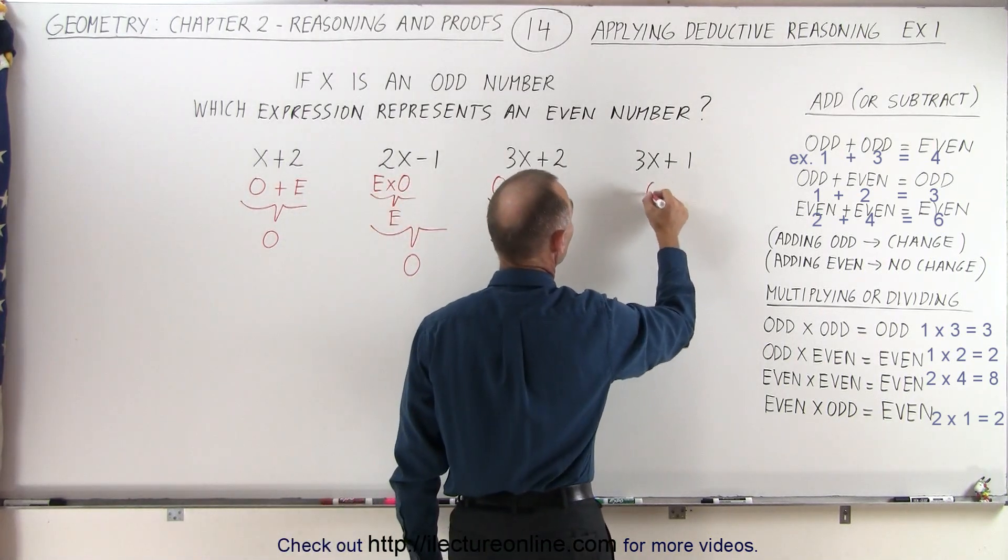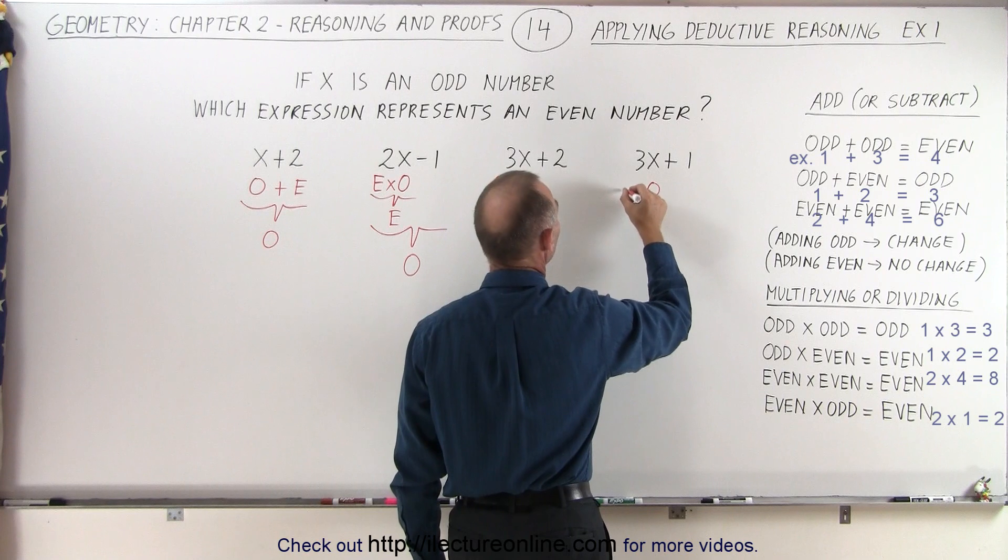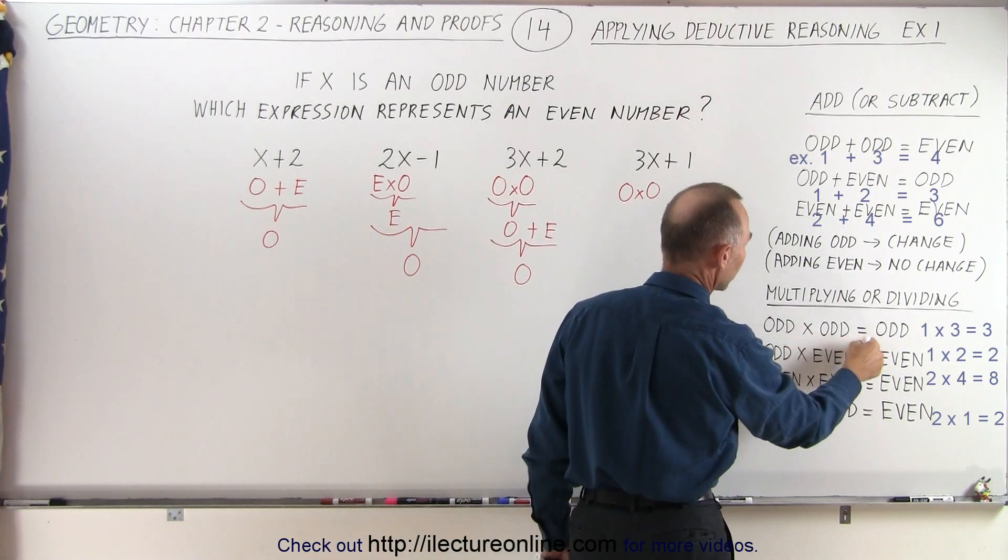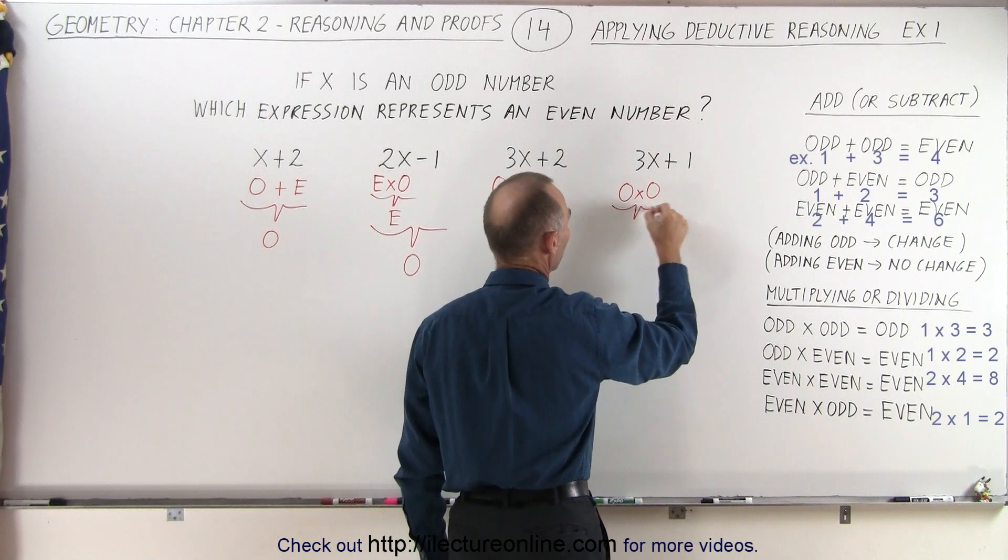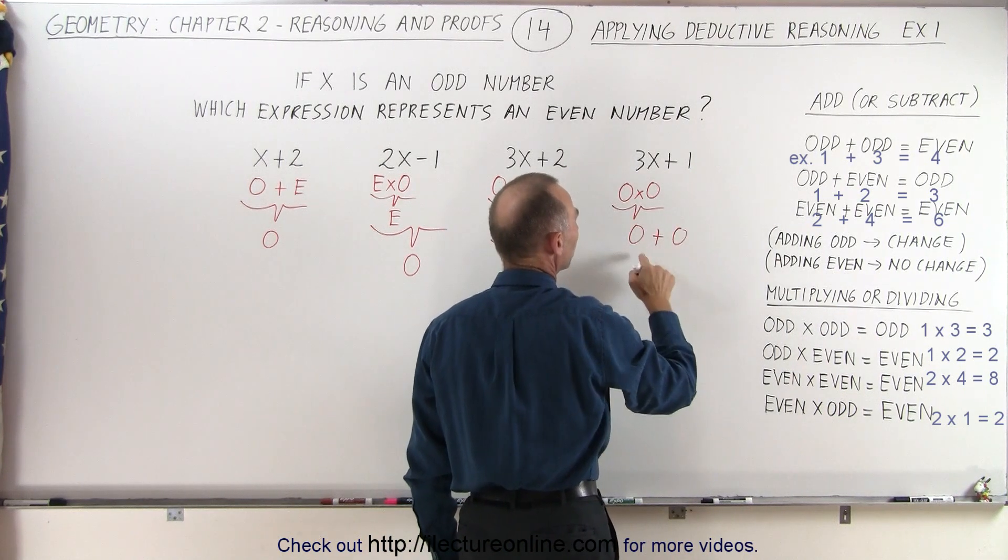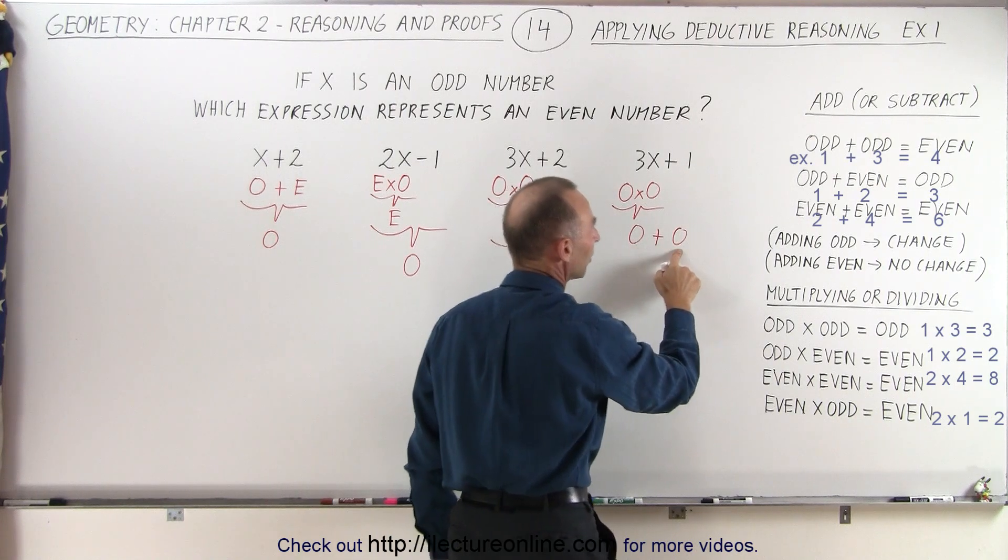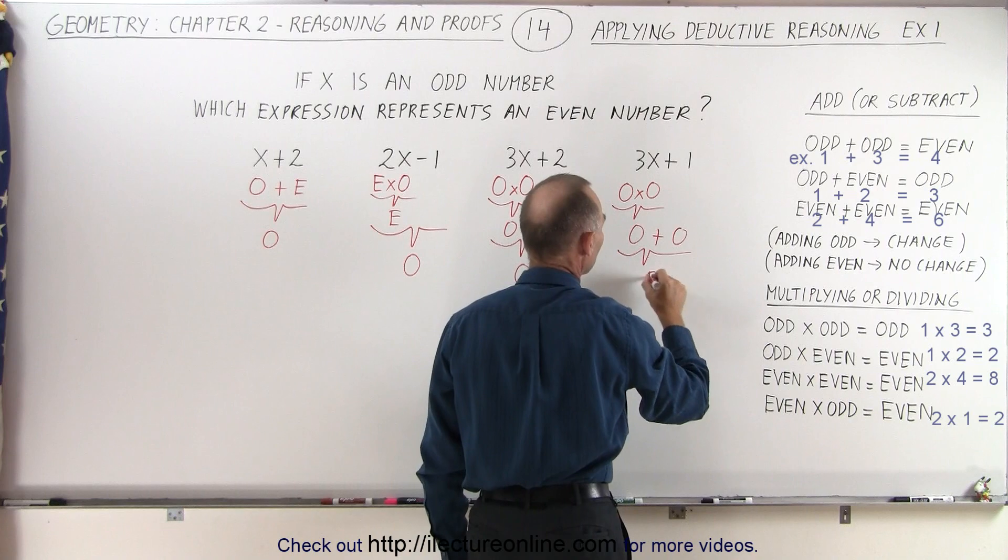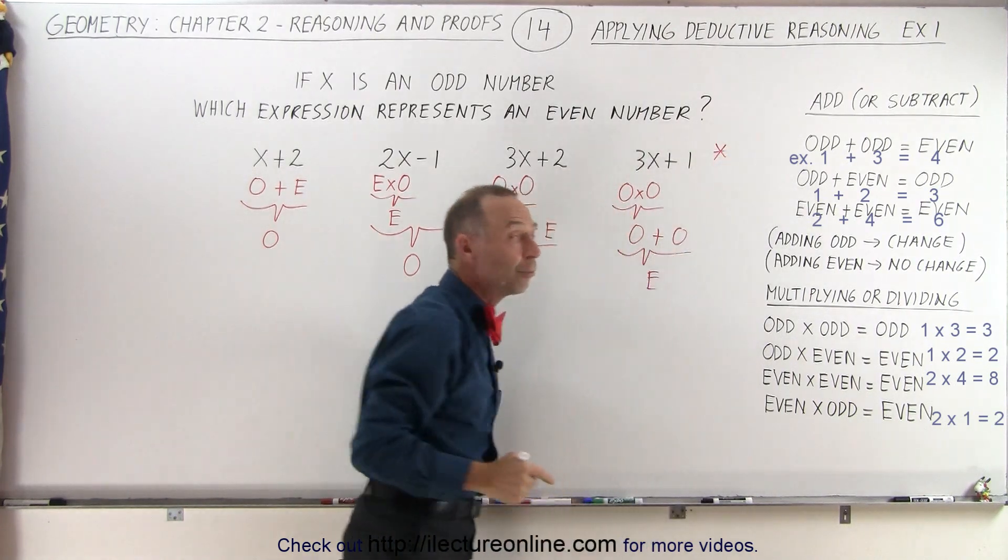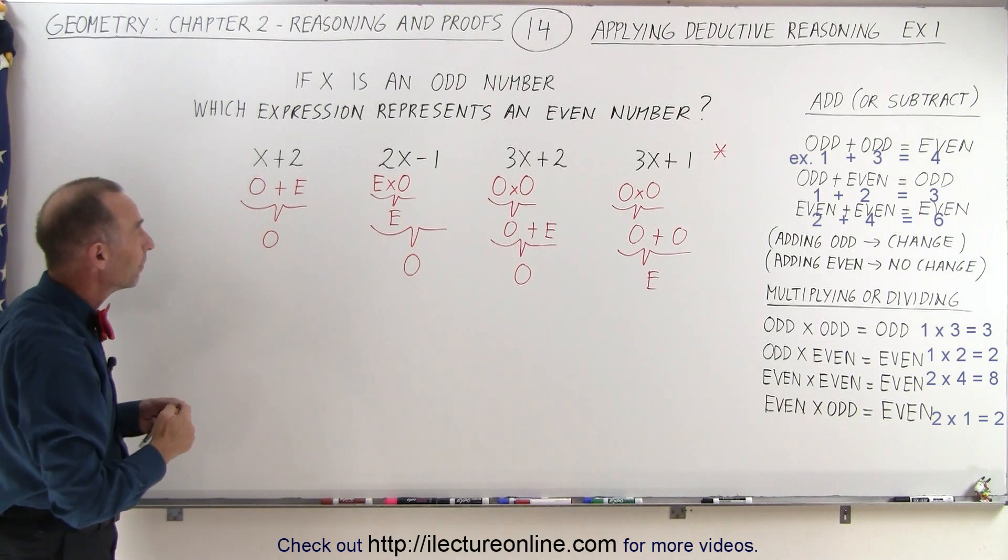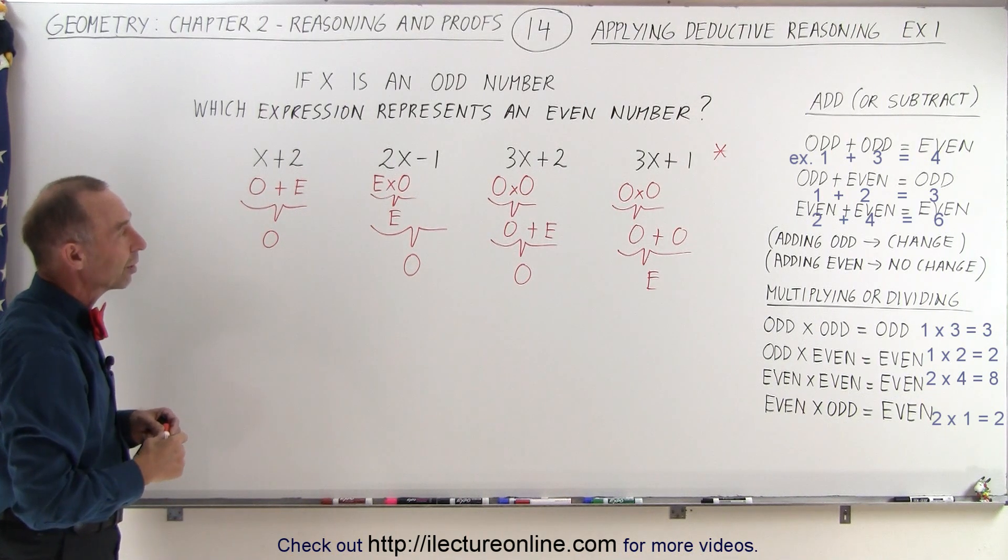And finally, here we have an odd number and we're going to multiply that times an odd number. So we have an odd multiply times an odd. That still gives us an odd result, plus an odd number. So now we have an odd number plus an odd number. Odd plus odd will give us an even result. And so this is the only expression of the four that gives us an even result. The other first three of them will give us an odd result.